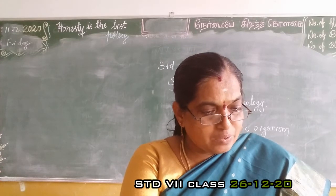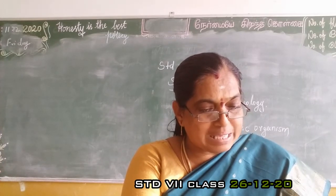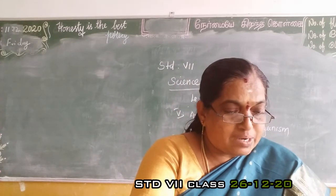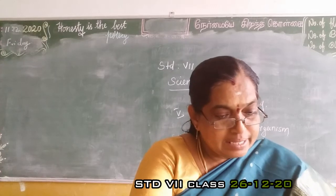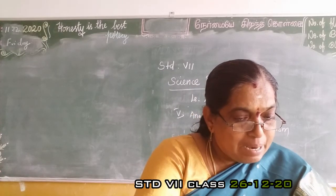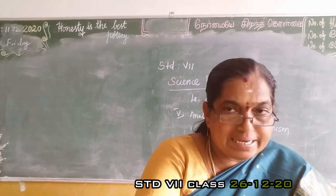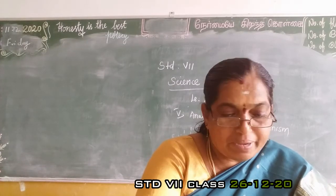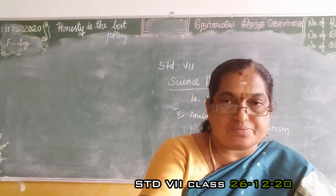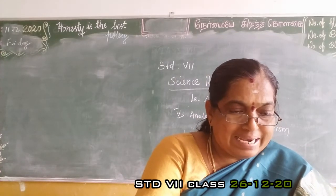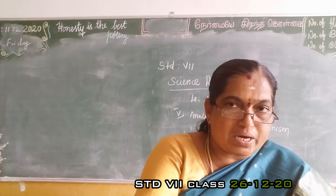Second question: which organelle uses energy from sunlight to make food? Answer: chloroplasts. Chloroplasts in plant cells use energy from sunlight to make food.